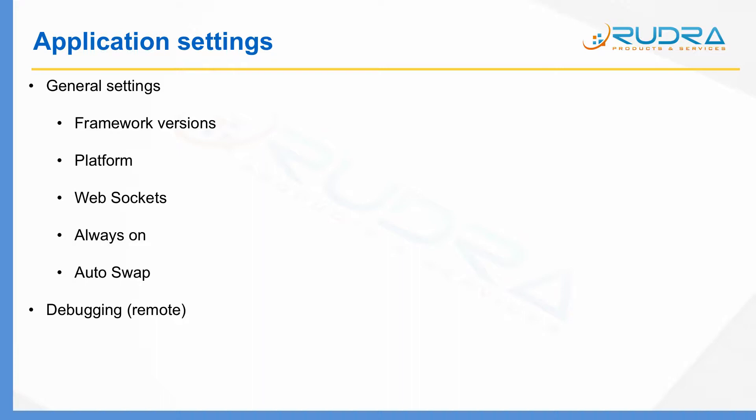In the framework section, you are able to specify the version of the .NET Framework, specify the version of PHP, Python, and Java, etc. The second one is platform. Here, you'll be able to select whether it is a 32-bit environment or 64-bit environment.